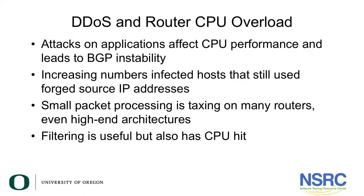One of the problems with ISPs is that this can really overwhelm router CPU cycles. Even with very high-end architectures, small packet processing is taxing on any CPU, and while filtering can be useful, it also has a CPU hit. You really want to mitigate these kinds of distributed denial of service attacks in a sophisticated fashion that has the least impact on your network infrastructure resources.